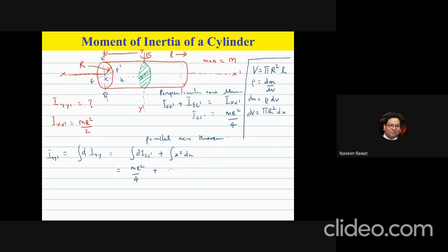In the second term, I need to integrate about this axis, moving from −l/2 to +l/2. The expression will be x² times dm, which is ρ dV. I can write ρ times dV as πr² dx.